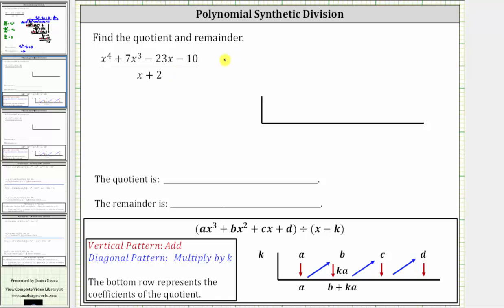We want to find the quotient and remainder using synthetic division. Looking at the notes below, to set up for synthetic division, we need a row of the coefficients here inside the table, and then the value of k on the outside where the divisor is in the form of x minus k.